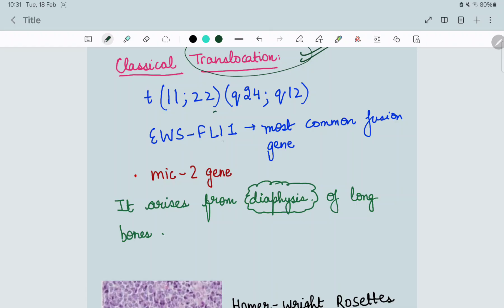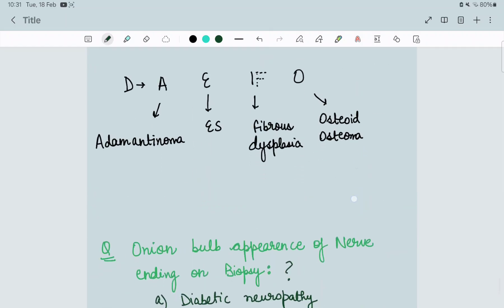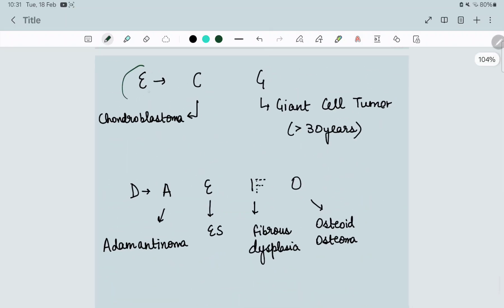This is an EWS-FLI1, the most common fusion gene. MYC-2 gene is also common. It arises from the diaphysis of long bones. Now, how to remember which bone tumor arises from epiphysis versus diaphysis? From Ewing's, you can learn ECG.